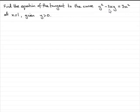We've got y² - 2xy = 3x². And we've got to find the equation of the tangent at the point where x is 1, given that y is greater than 0.